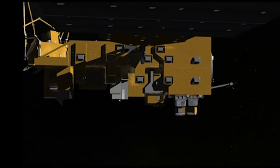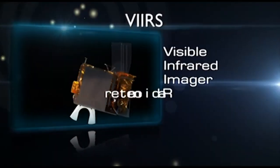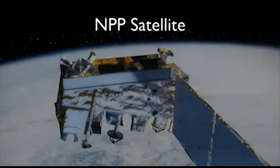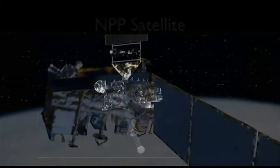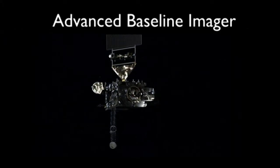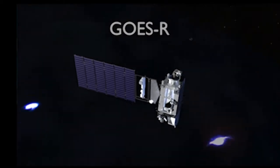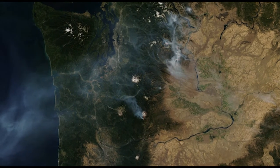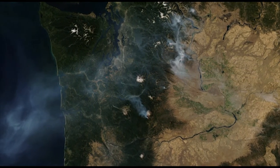In the future, when the MODIS instruments are retired, newer instruments such as VIIRS, carried by the NPP satellite, and the Advanced Baseline Imager, carried by GOES-R, will continue to take measurements that are critical to estimating atmospheric pollutant concentrations.